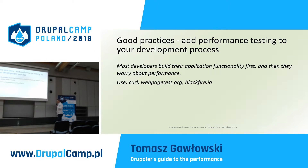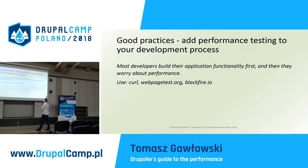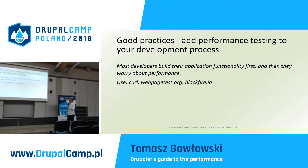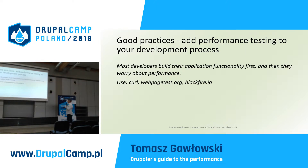A good practice for development is to add performance testing to your development process. Most of us build applications with functionality first, then worry about performance — usually with no budget for that. So if you have Jenkins or something similar, you can use Calibre, webpagetest.org which is quite good and provides an API, and Blackfire.io which also provides an API. Call them during your continuous development process and see the history. If your application starts to get slower, you can find in the history when it started.